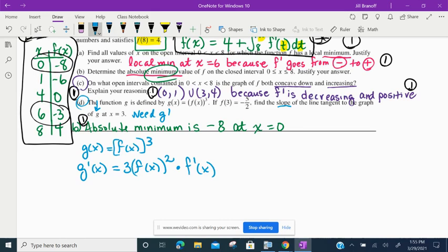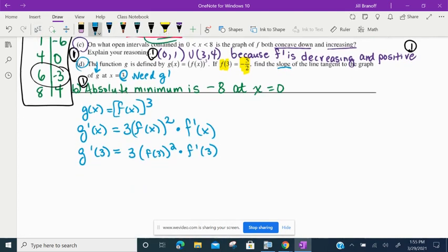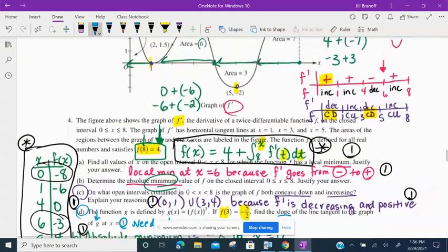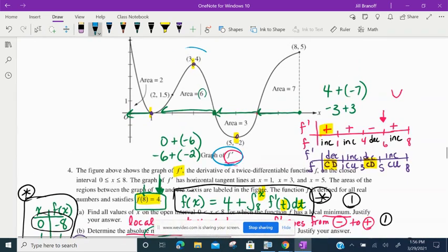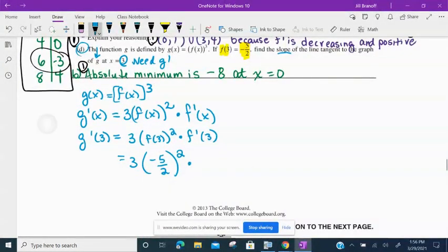That's my G prime. But I want to know when X is 3. So G prime of 3 is equal to 3 times F of 3 quantity squared times F prime of 3. Over here we're told F of 3 is negative 5 halves. So we have 3 times negative 5 halves squared times F prime of 3. Go back to your graph. This is F prime. F prime of 3. F prime of 3 is 4. Now on the AP exam, this is nothing but arithmetic left. So you should stop here. So if you stop here, you will get full credit.